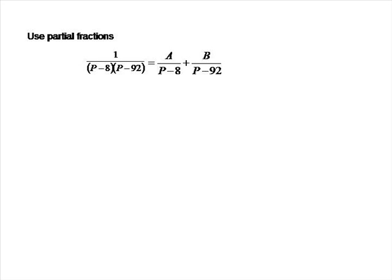Because p minus 8 and p minus 92 are linear terms that are unrepeated, we can find constants A and B using the cover-up rule. A is the value over the term p minus 8, so the denominator becomes 0 when p equals 8. Covering up the (p minus 8) factor and setting p to 8 in what's left, we see that A must be 1 over (8 minus 92), in other words A equals minus 1 over 84.